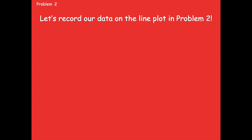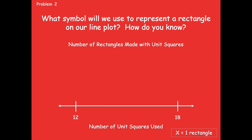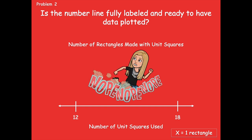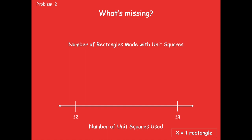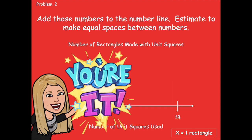Now we're going to look at problem two and record our data on the line plot. What symbol will we use to represent a rectangle on our line plot? We would use an X because our key tells us that 1 X equals 1 rectangle. Is the number line fully labeled and ready to have data plotted? Nope — we're missing the numbers between 12 and 18. So add 13, 14, 15, 16, and 17 to your number line, equally spaced. Pause the video, add those, and click play when you're ready.